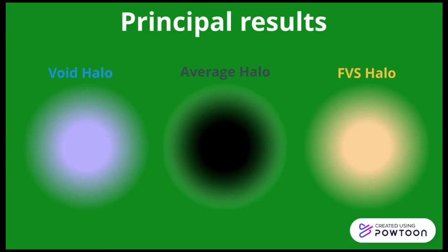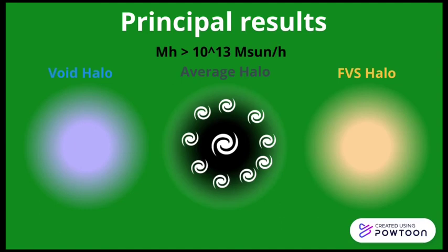If now we take a halo with masses greater than 10^13, the halos have more satellite galaxies. But when it is inside the void, their number reduced considerably, equally as their stellar mass. In the FVS, the number of satellites increased with respect to the mean, but their stellar mass is reduced.